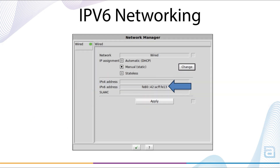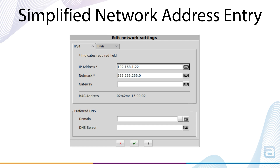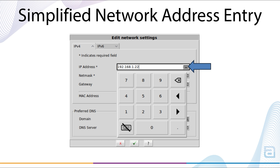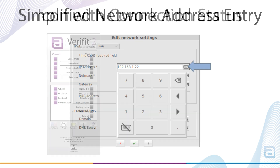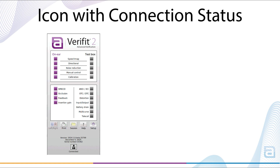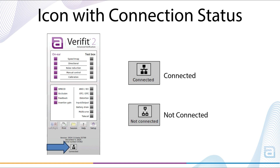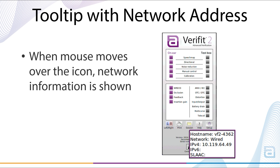Once connected via IPv6, the address provided will be a series of letters and numbers with additional characters relative to an IPv4 address. When an IP address is manually configured as a static address on the network, entry is now via an entry pad to simplify inputting network address details. The entry pad is available for both IPv4 and IPv6 network address entry. To identify whether a network connection is active, an icon on the home menu shows whether the network is connected or not, and hovering the mouse over the icon will display a tooltip indicating whether the connection is wired or wireless, and the network address information.